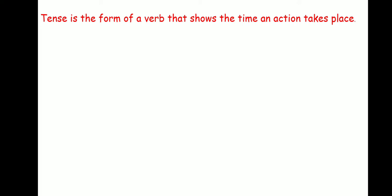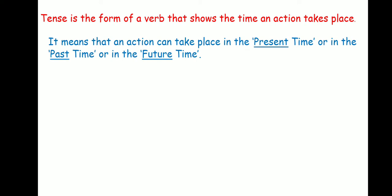Tense is the form of a verb that shows the time an action takes place. By the word tense, we mean at what time the action is taking place — when is the action taking place? An action can take place in the present time, the past time, or the future time. Past means something that is already over or completed, and future time is the time that is yet to come.